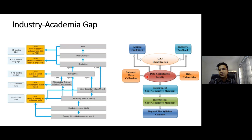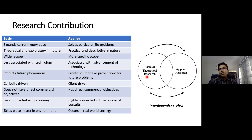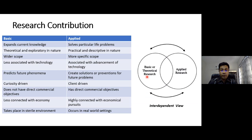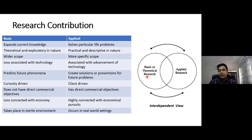Research contribution to higher education uses two primary mechanisms: basic research and applied research. Basic research expands current knowledge of a particular system, while applied research solves particular real-life problems. Basic research is primarily theoretical and exploratory, with wider scope, whereas applied research is practical and descriptive, with more specific scope. Basic research is less associated with technology, while applied research is totally associated with advancement of technologies.